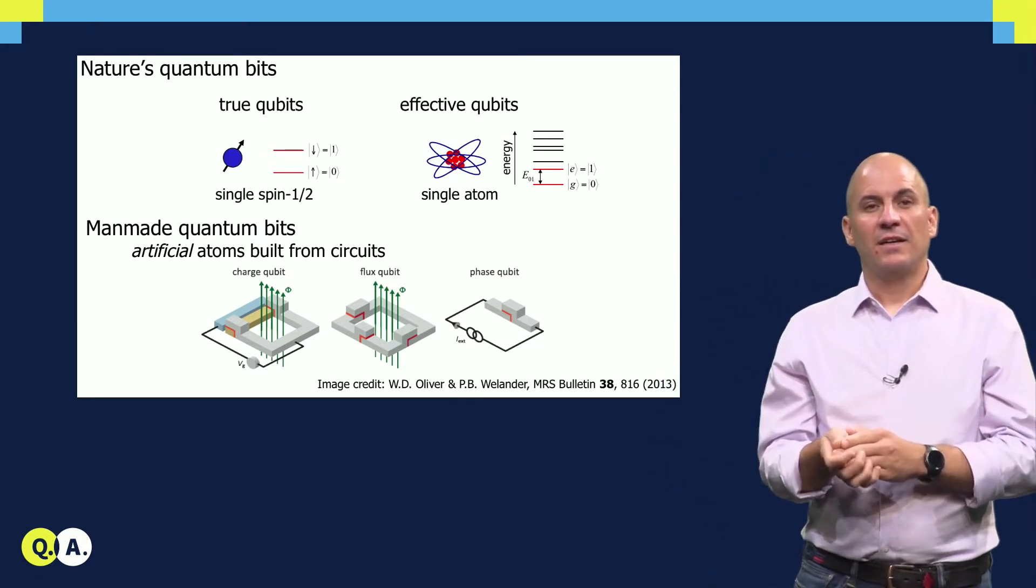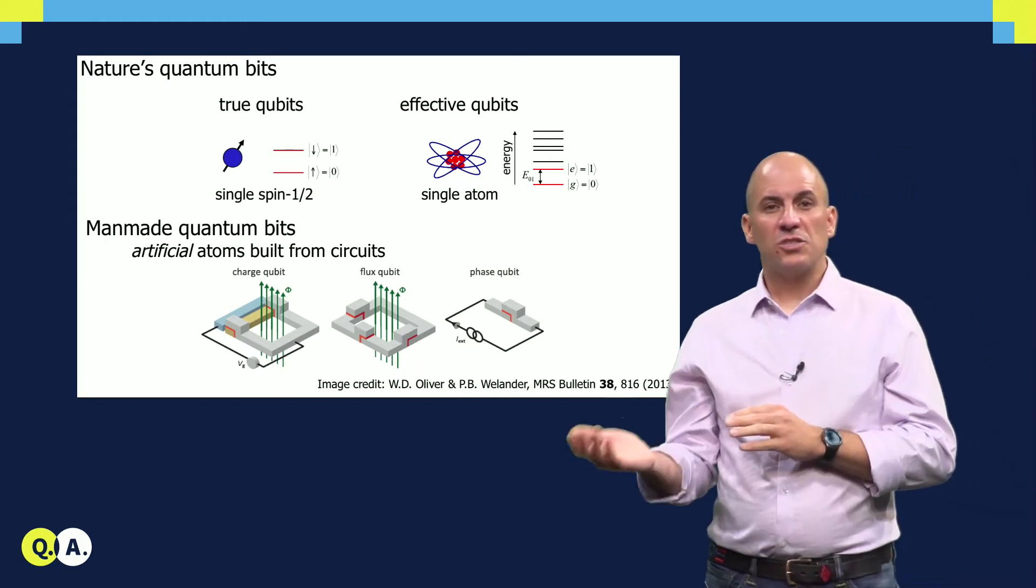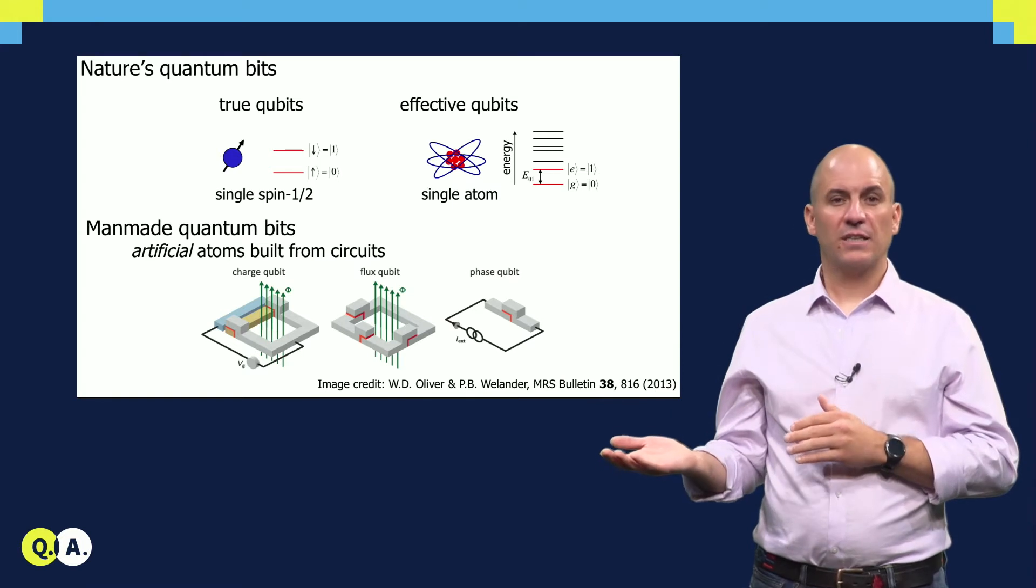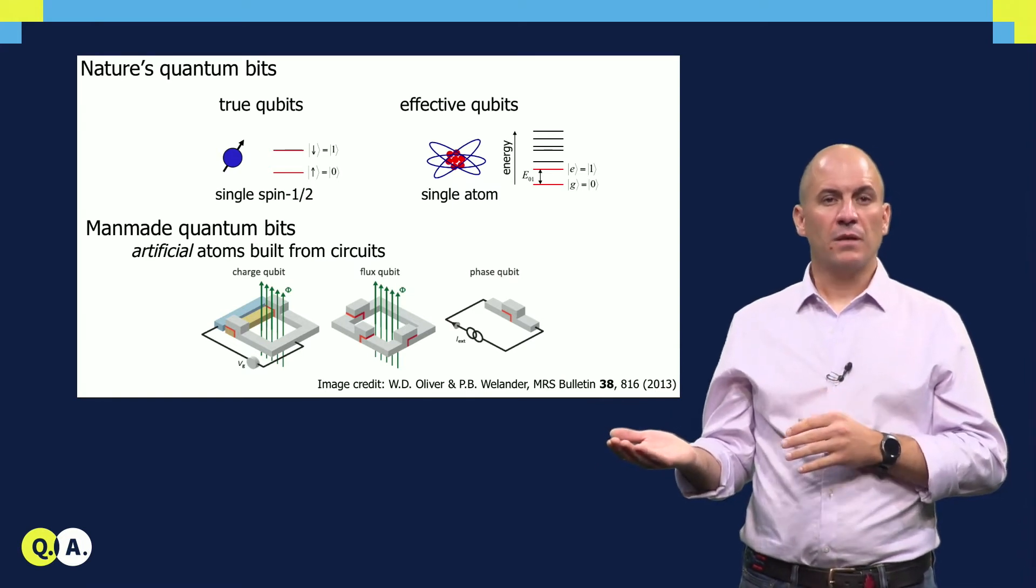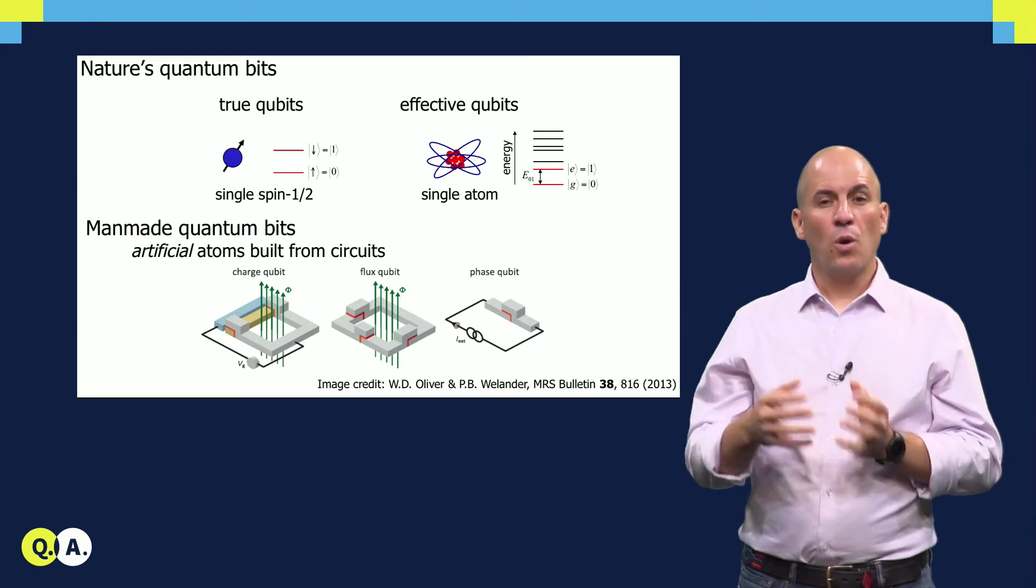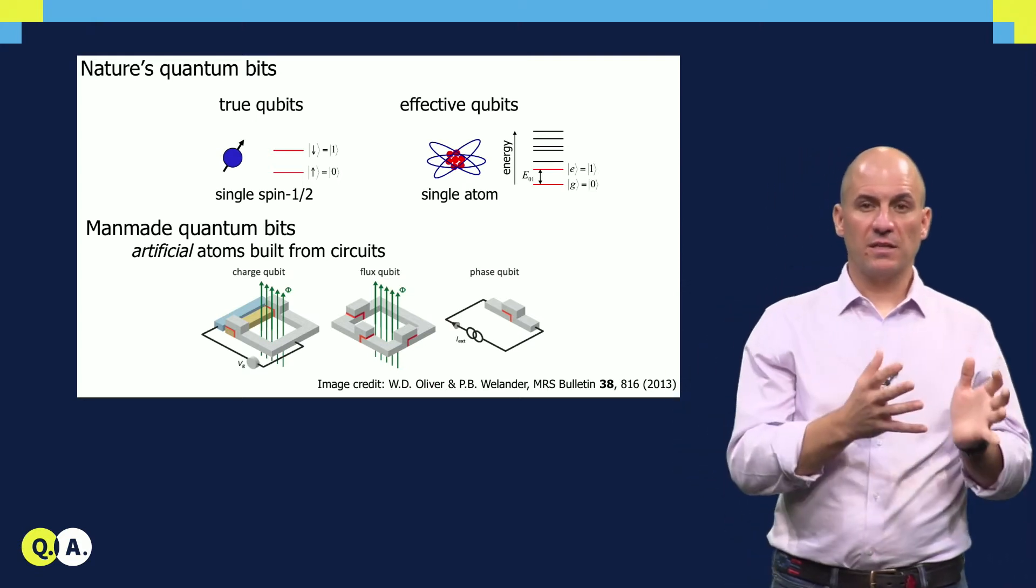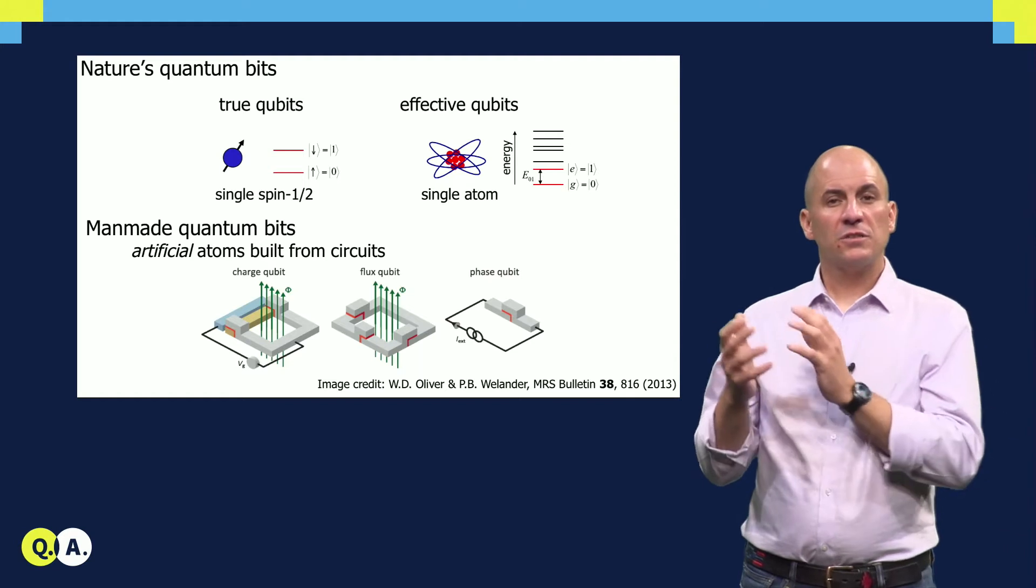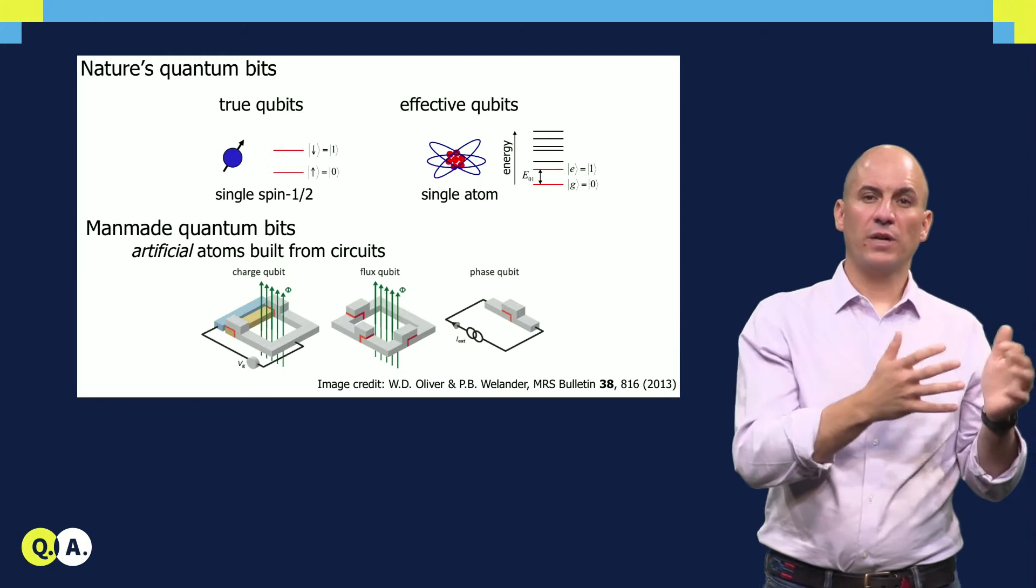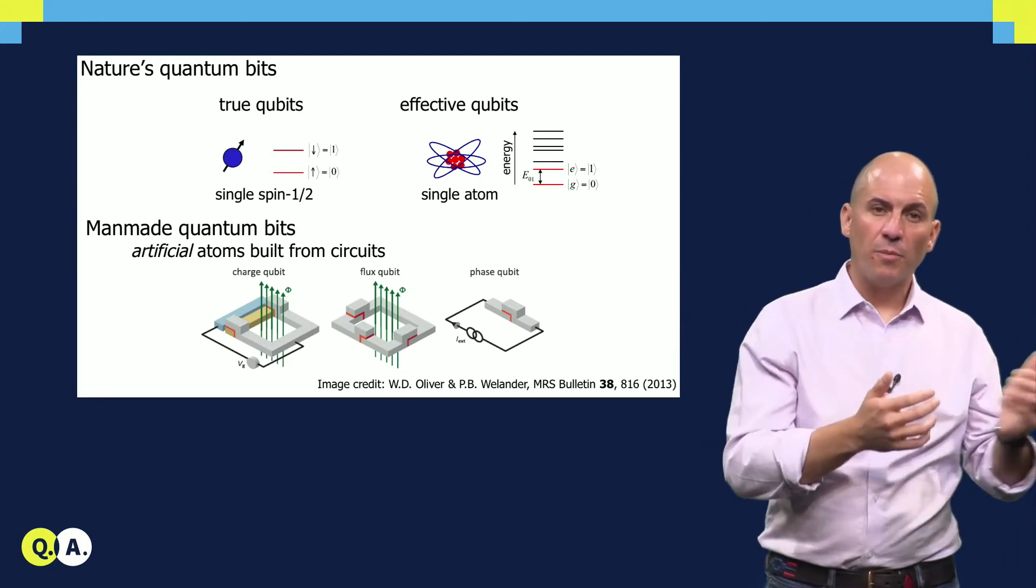But back to design. Superconducting qubits generally consist of superconducting electrodes, or islands, that are interconnected by Josephson junctions. The Hamiltonian typically consists of two non-commuting contributions, one capacitive and one inductive. The first tends to localize the cooper pairs, and the second favors their tunneling from one island to another. In other words, their hopping.